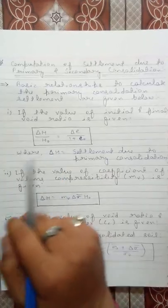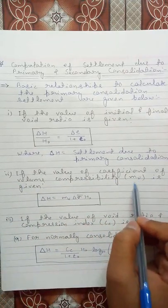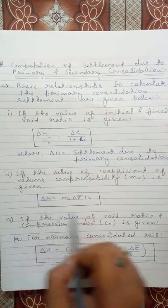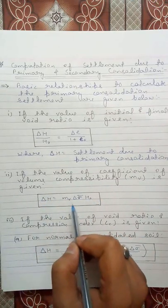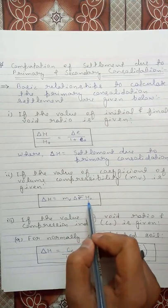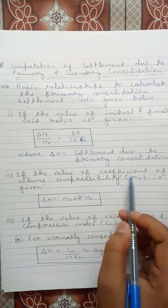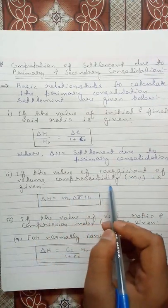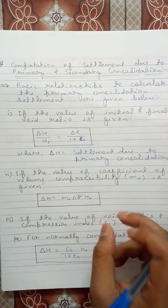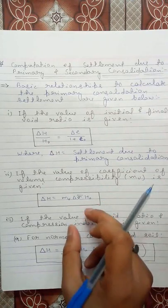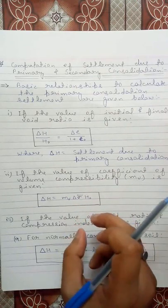Second, if the value of coefficient of volume compressibility Mv is given, we use: δH = Mv · Δσ̄ · H₀, where Mv is the coefficient of volume compressibility, Δσ̄ is the increment in stress or change in effective stress of the layer, and H₀ is the thickness of the layer.